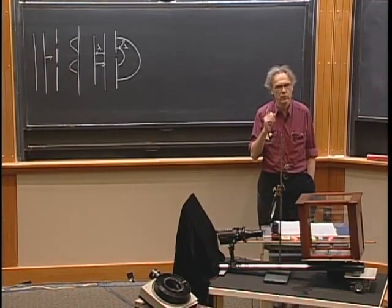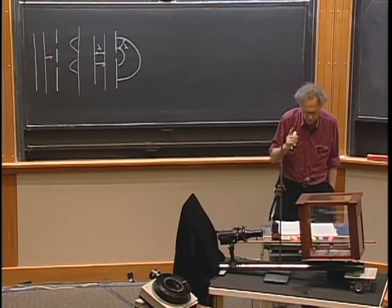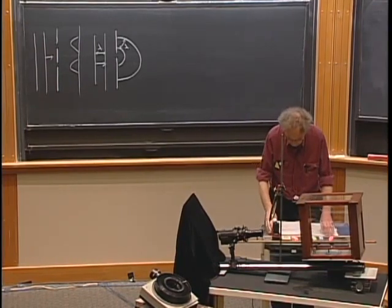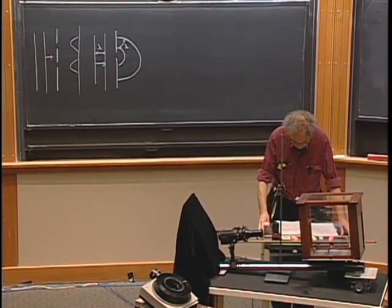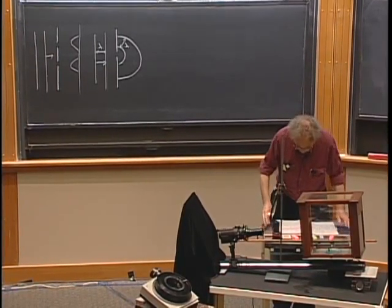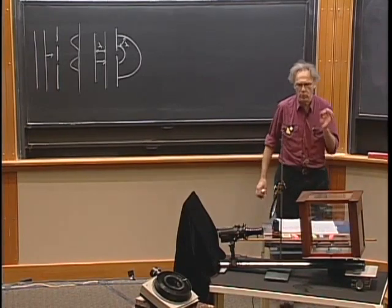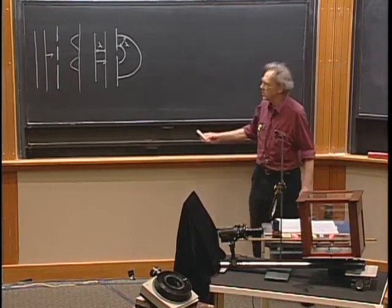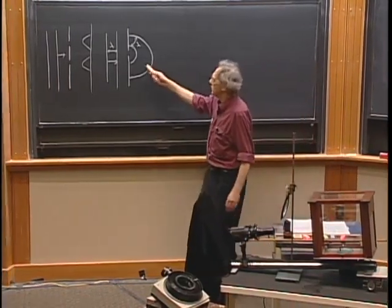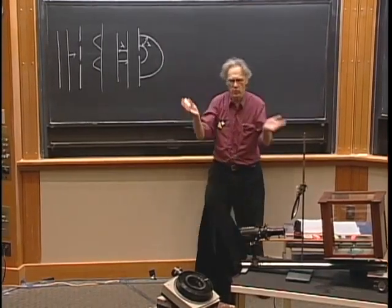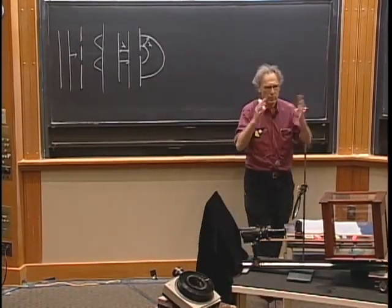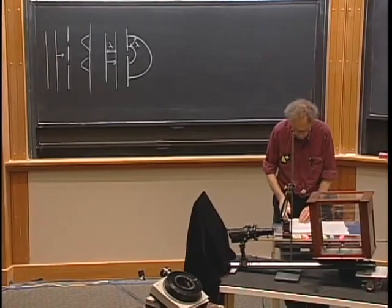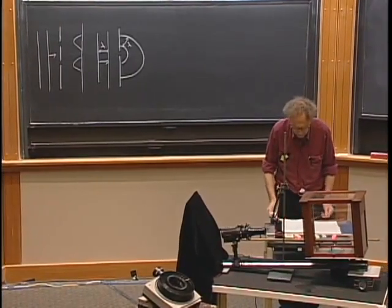The Huygens-Fresnel principle states: all points in the aperture plane may be thought of as secondary point sources of spherical waves, and the point sources replace the real source which is flooding the screen. In the case of water, a two-dimensional surface, there would be circles. But when dealing with light in three dimensions, you can think of them as spherical waves.